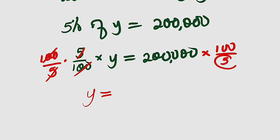Leaving only y equals, we can take the whole of this and divide by 5 which is going to give us 40,000. Then 40,000 multiplied by 100 will give us 4 million. So this is 4 million.